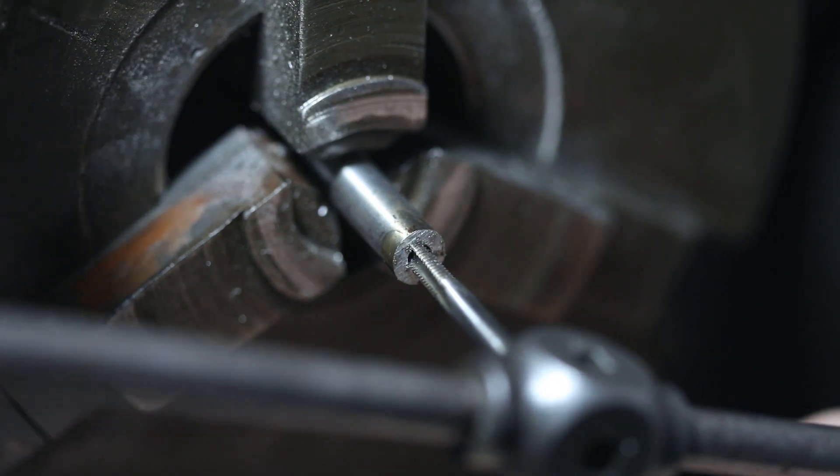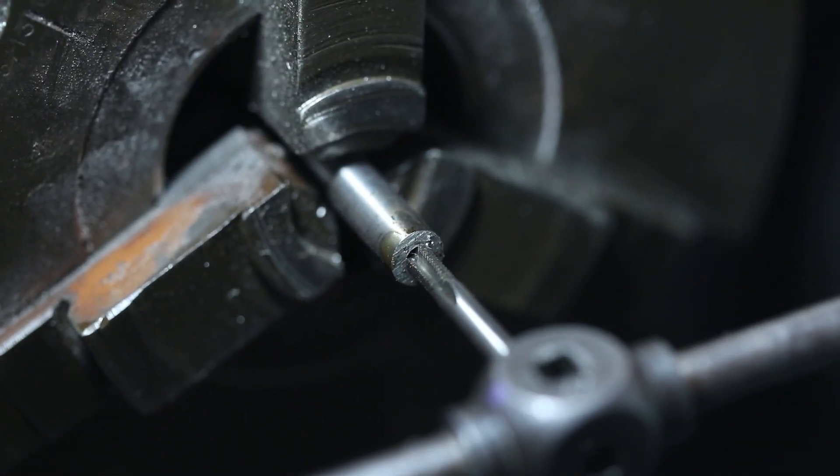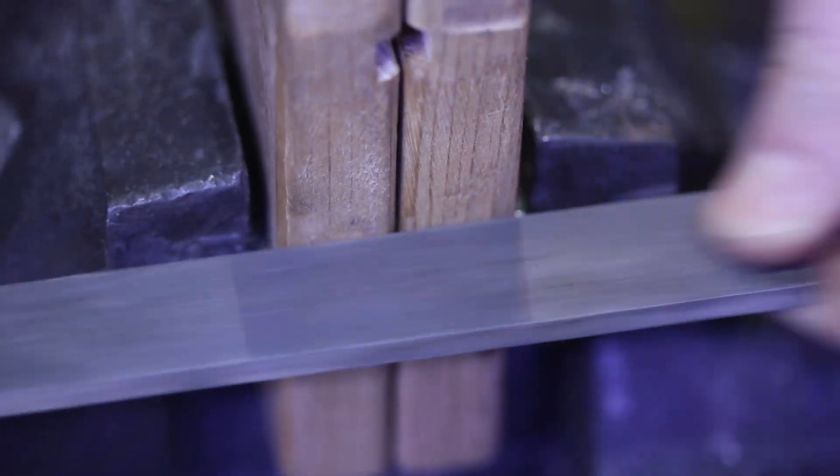I then tapped the hole to accept an M4 bolt. A small flat was filed using the same jig from before.